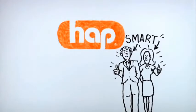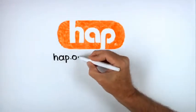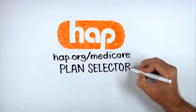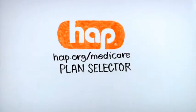But HAP has free tools and resources to make the choices clear. Get HAP smart. Visit us online at hap.org slash medicare and try our plan selector. It can help narrow down what options are right for you.